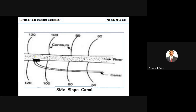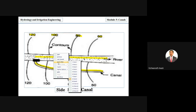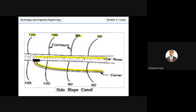In the diagram, there is a river with contours at 120, 100, 80, and 60. The canal is aligned at a right angle to the existing contours, as shown. It is also provided along natural drainage features.